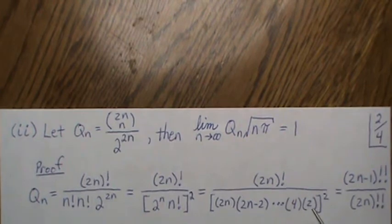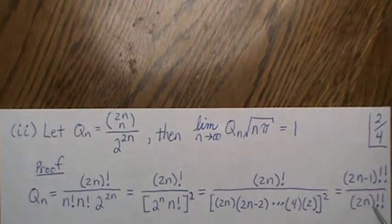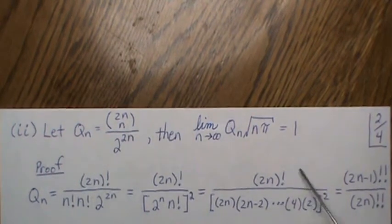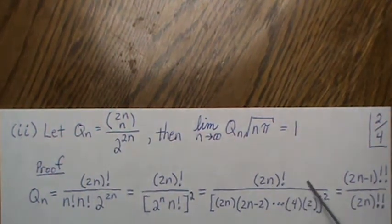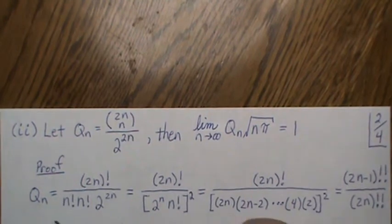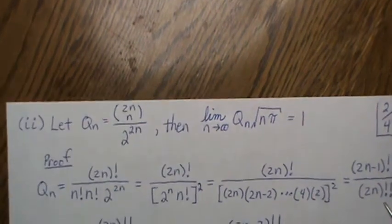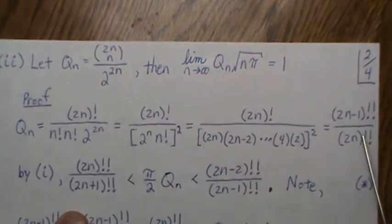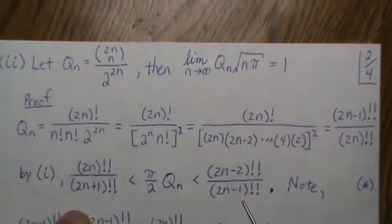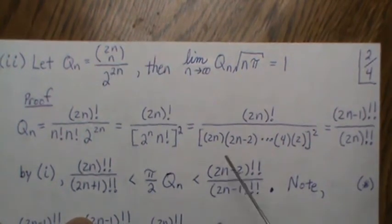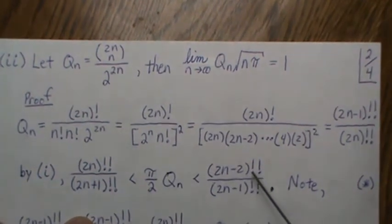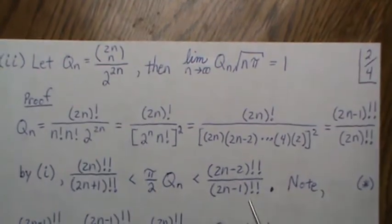Unfolding 2n factorial shows it equals the product of even terms — which is 2n double factorial — times all the odd terms. Squaring gives us q_n expressed as 2n double factorial squared over 2n minus 1 double factorial squared, times the 1 over 2 to the 2n factor. By step 1, we know the double factorial inequality holds, so q_n fits exactly into that inequality. To make the top a 1, we multiply everything by the appropriate reciprocal, which carries through to give us a sandwiched expression.